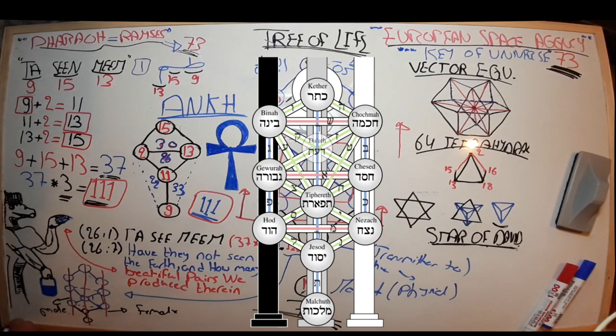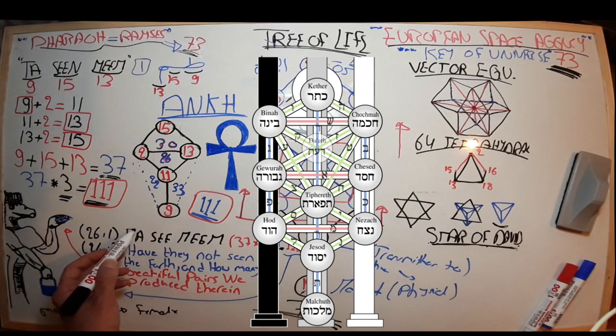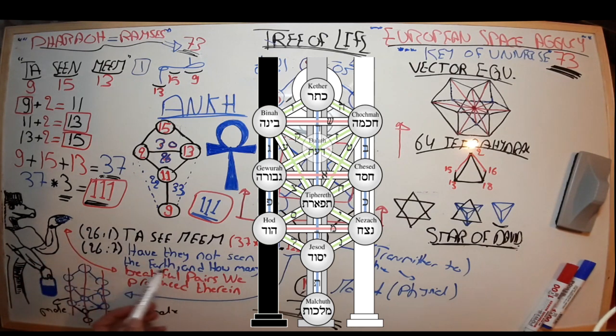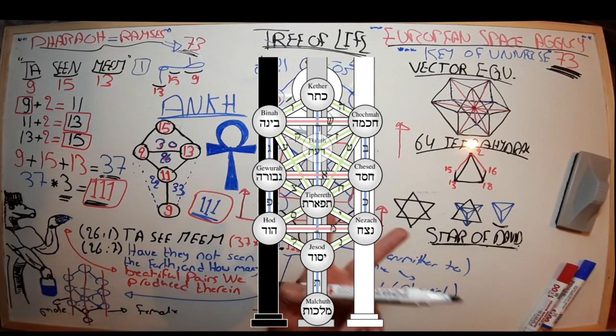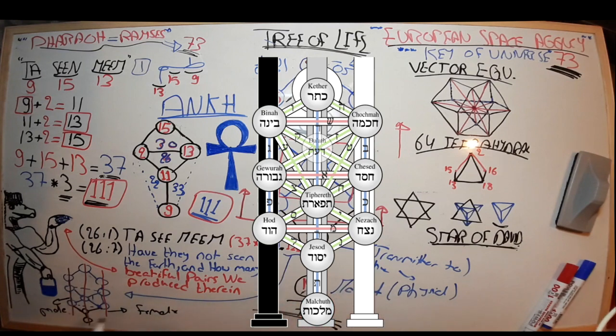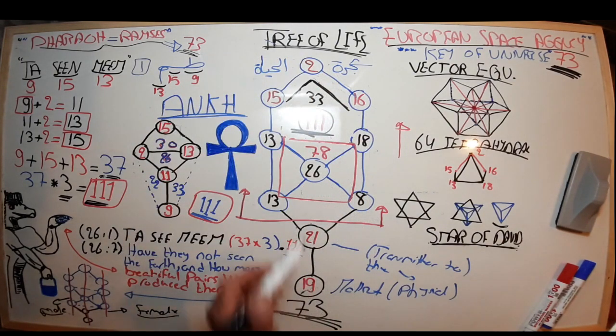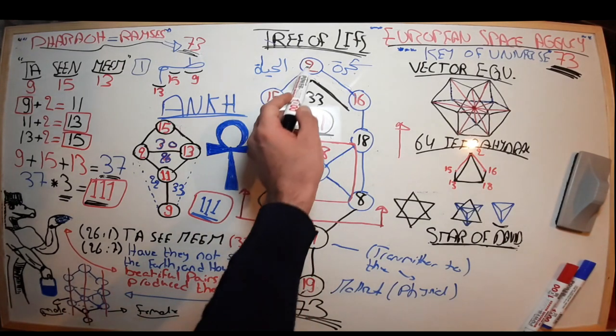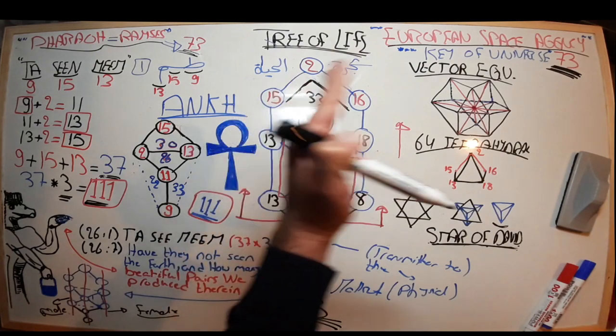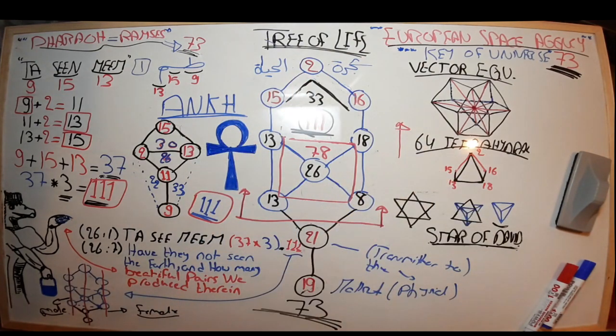And God was talking about Ta-Sin-Meem in the first verse, in the seventh verse: Have they not seen the earth and how many beautiful pairs we have produced therein? The pairs—it's a female and male—and it fits exactly to our decoding of the Tree of Life with 111. And not only that, look at the top of the tree—it's 2: male and female.